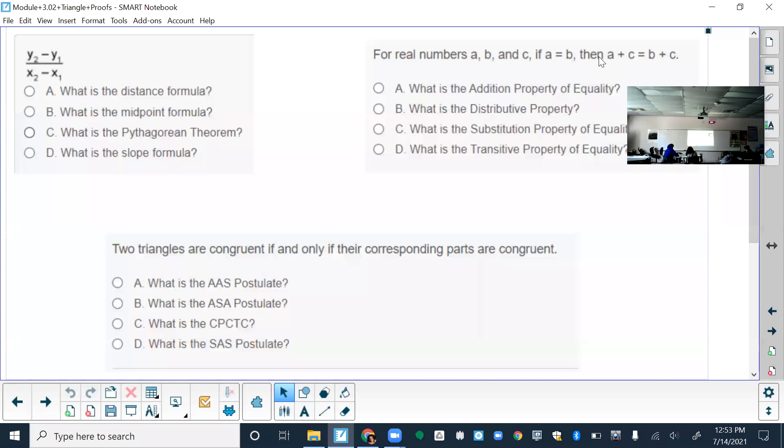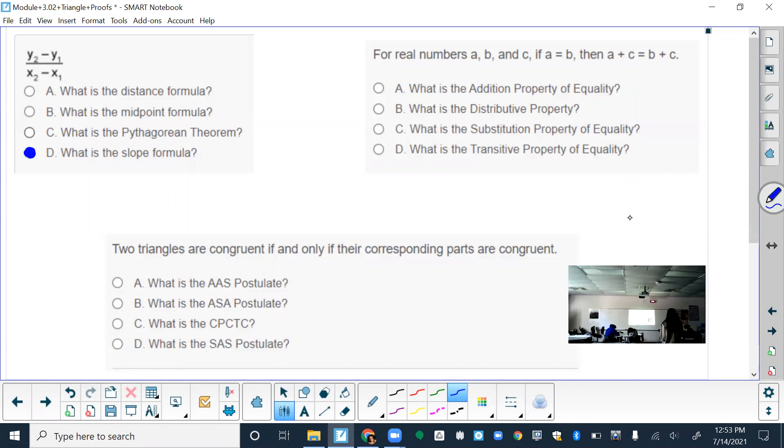Do you have a guess on what formula that is? A, B, C, or D? If you said D, then that is correct. That is our slope formula. If you picked something else, just make note that's the slope formula.